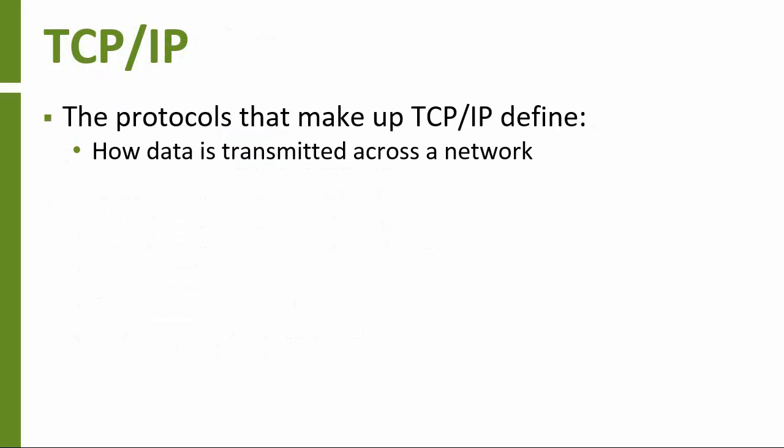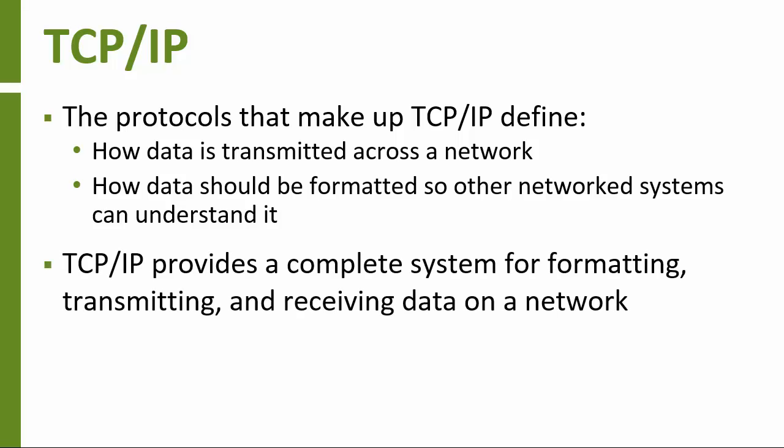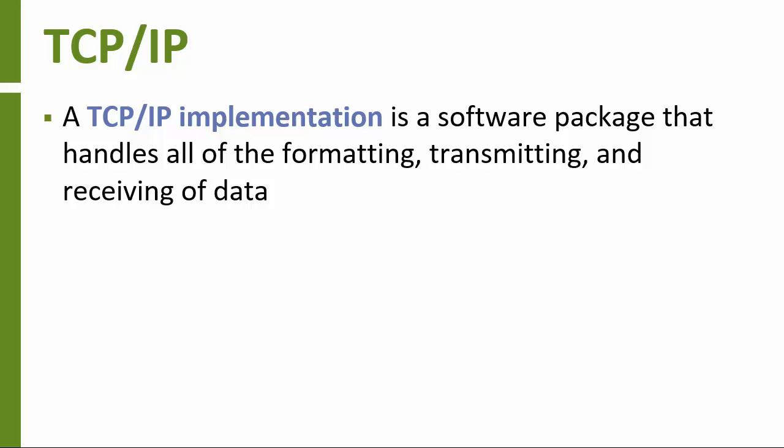The TCP-IP family of protocols defines the process used to transmit data across a network, and equally important, how that data should be formatted and packaged so other computers on the network can understand it. TCP-IP and its family of related protocols provide a complete system that defines how data should be formatted, transmitted, and received on a network. The actual work of formatting, transmitting, and receiving data with TCP-IP is performed by a special software package, the TCP-IP implementation.